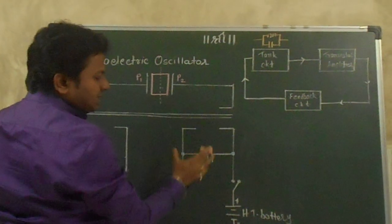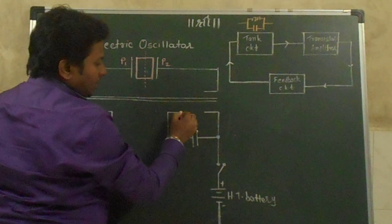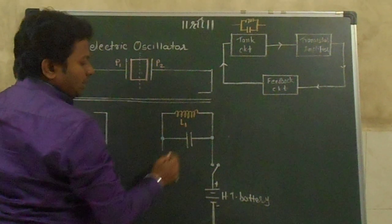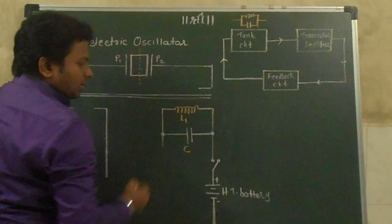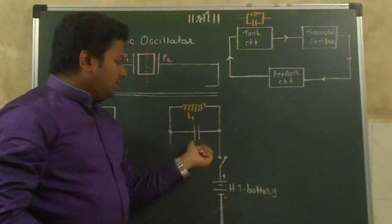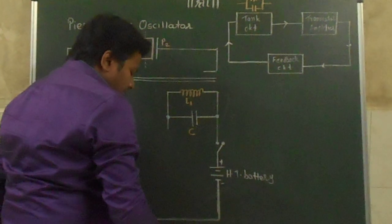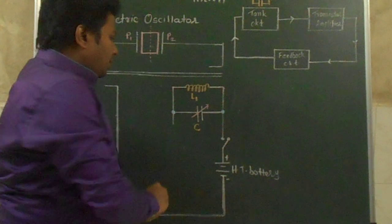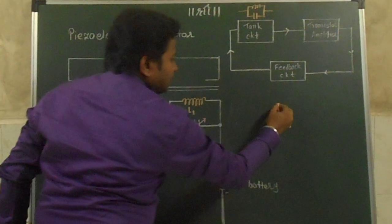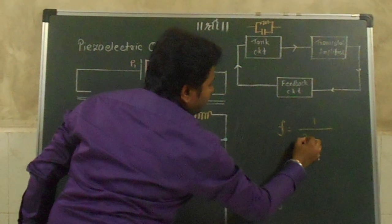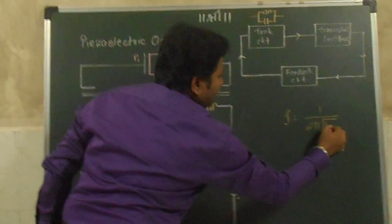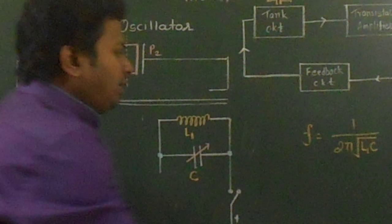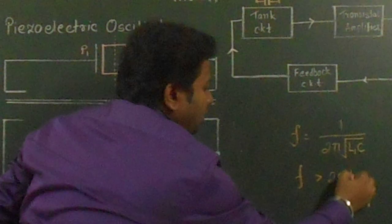Now let us see where is the tank circuit. Here we have a capacitor. Let us place one coil in parallel with the capacitor. Let us call the coil L1 and the capacitor C. So here we have a parallel combination of inductor coil L1 and capacitor C. We require a variable capacitor so that we can set the capacitance to the required value. The frequency of this tank circuit is given by F = 1 / (2π√(L1 × C)). L1 is constant, so you can change the value of C so as to obtain a frequency above 20 kHz.